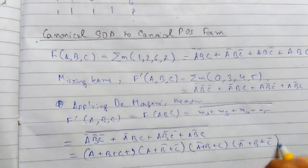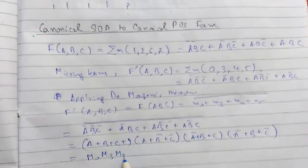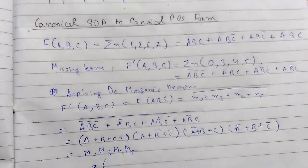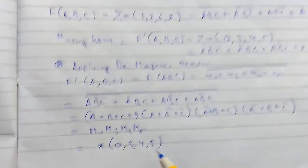So finally we can say this is m0, m3, m4, m5, or we can write this as π(0,3,4,5). So this is how you convert it.